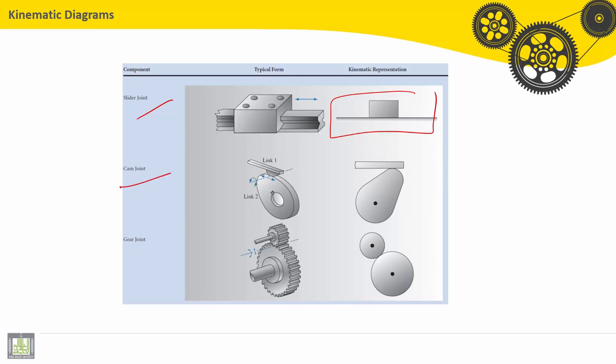Other examples: for a slider joint, just a rectangle with the line. For a cam joint, we have to draw the cam with the follower. For a gear joint, this is the detailed drawing, and here we have to draw gears with two circles joined here with the revolute.